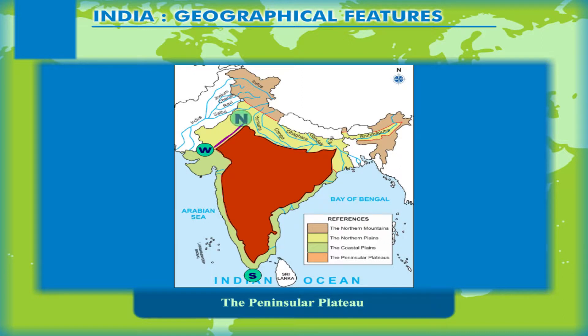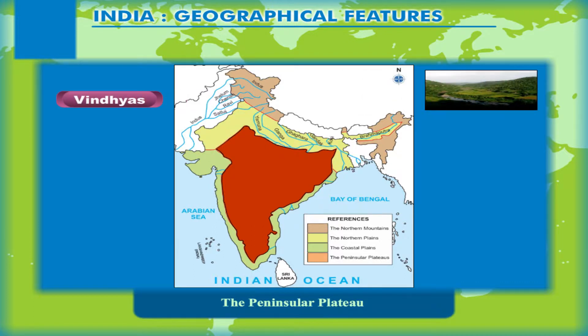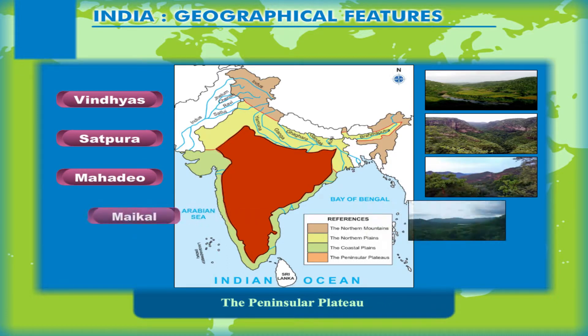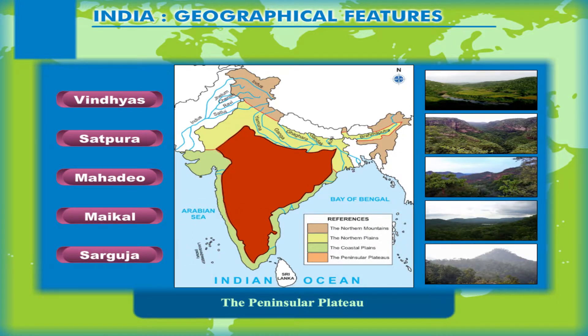The northern boundary is irregular and stretches from Kutch along the western edge of the Aravali range up to Delhi, then extends almost parallel to the rivers Yamuna and Ganga up to the Ganga-Yamuna confluence. The Vindhyas, Satpura, Mahadeo, Maikal, and Sarguja ranges separate it from the northern plains. It is bounded by the Western Ghats in the west and the Eastern Ghats in the east.